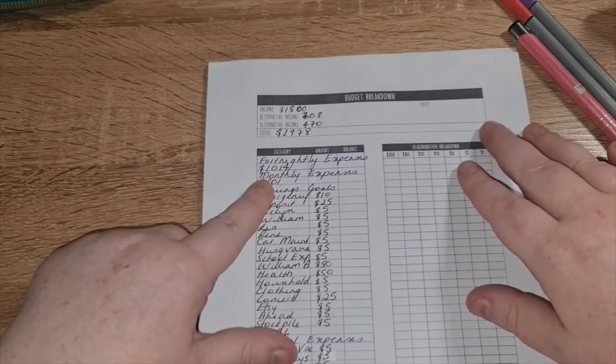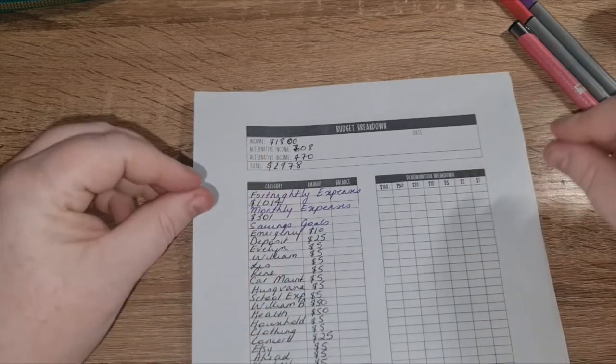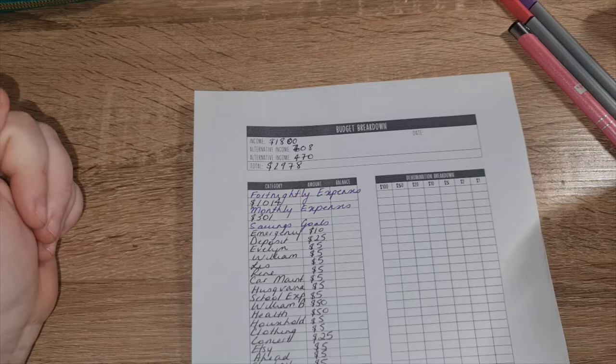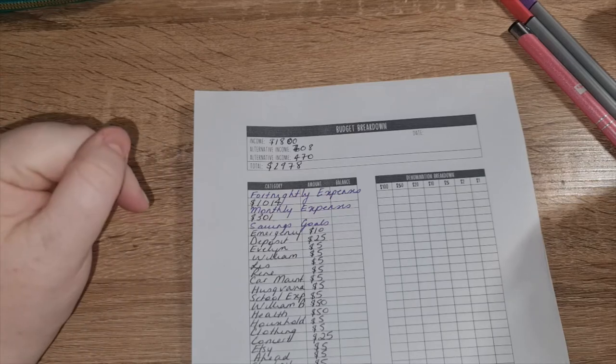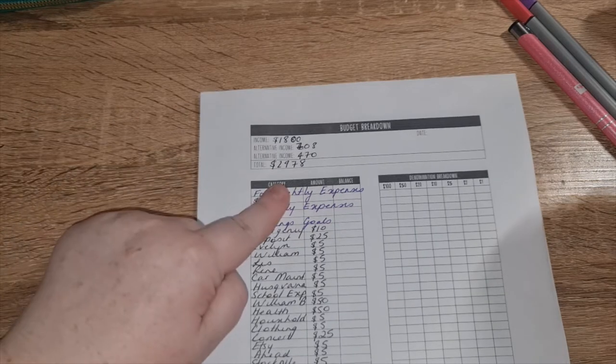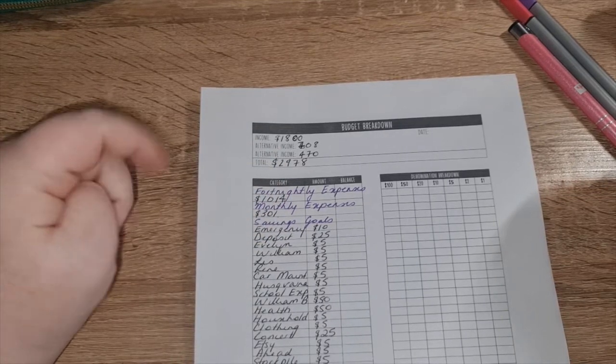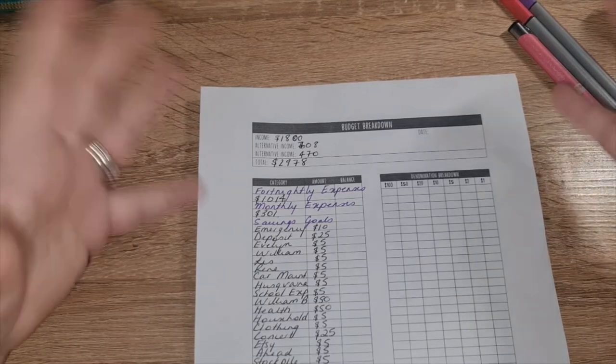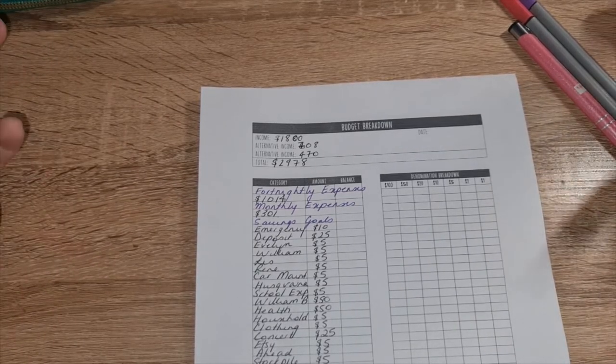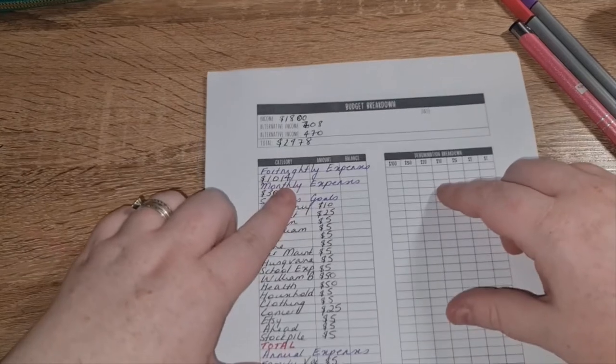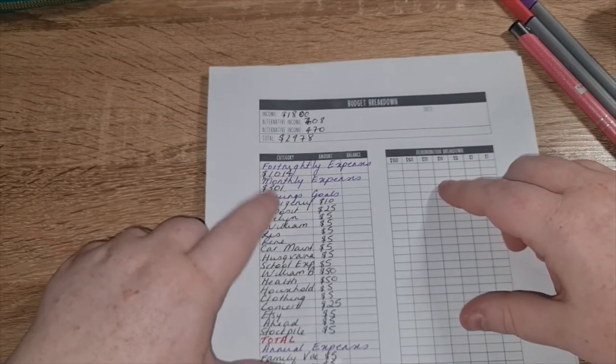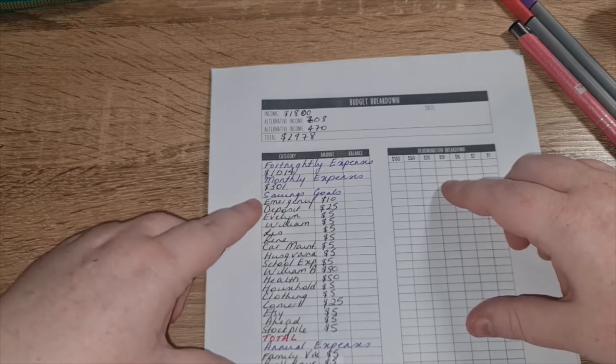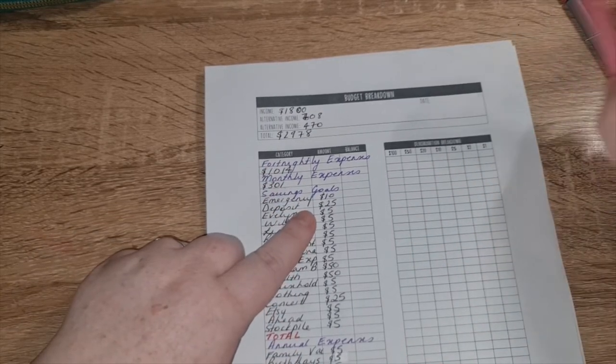Okay, so my fortnightly expenses, my income. I think this is the first pay of September. We got two thousand nine hundred and seventy eight dollars. I do get paid bi-weekly so I get this amount every two weeks. My fortnightly expenses were one thousand and fourteen, my monthly expenses were three hundred and eight.